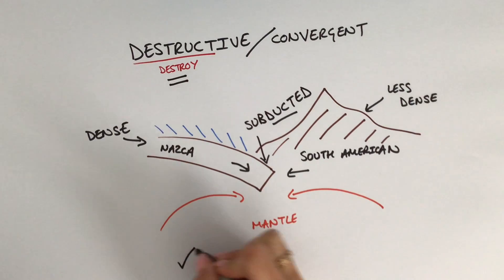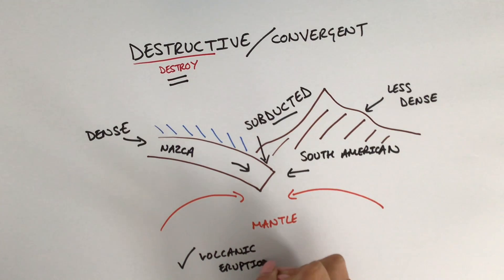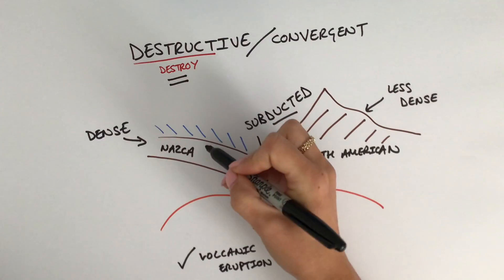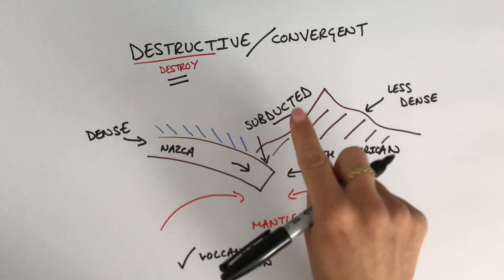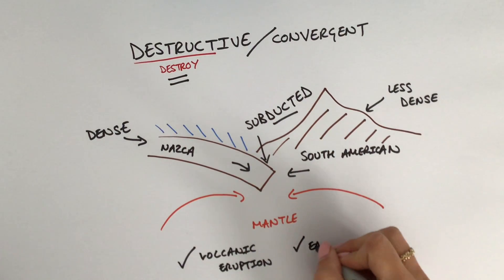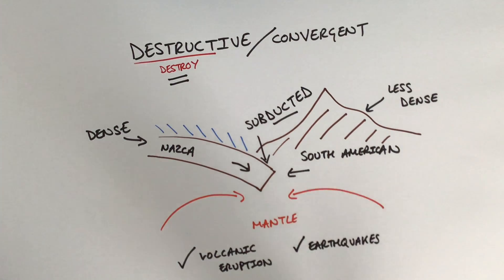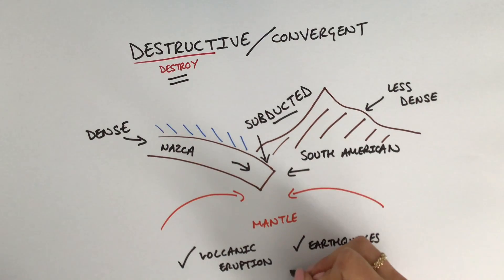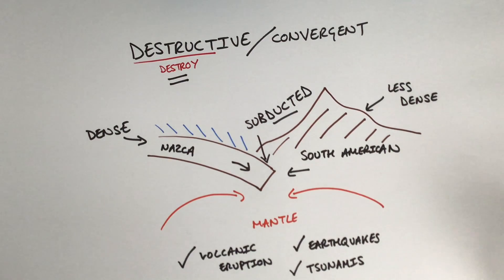When it comes to the tectonic hazards that happen at a destructive plate boundary, we tend to get volcanic eruptions. These can occur on the earth's crust or even in the ocean, and they can be extremely explosive. We also get earthquakes, which vary in strength — some minor, some major. There is also a potentially high risk of tsunamis at this particular type of plate boundary.